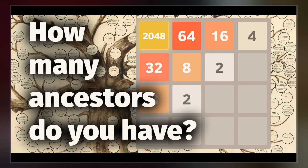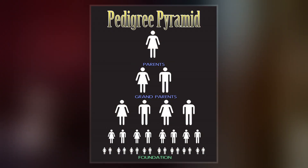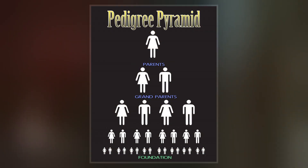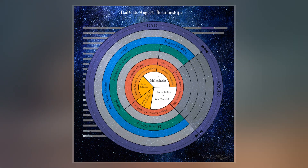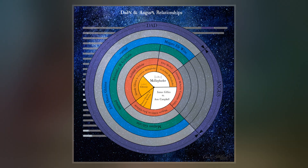Instead of consisting of all different individuals, a tree may have multiple places occupied by a single individual. This typically happens when the parents of an ancestor are related to each other.